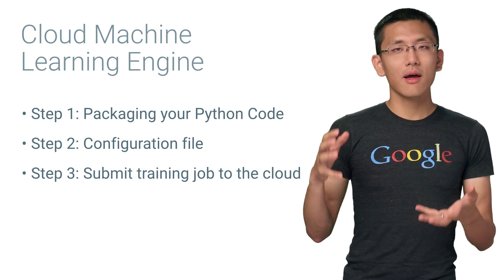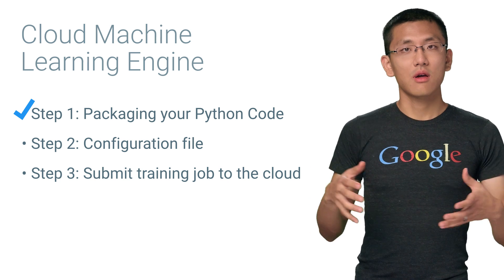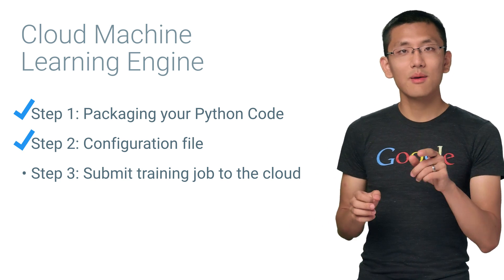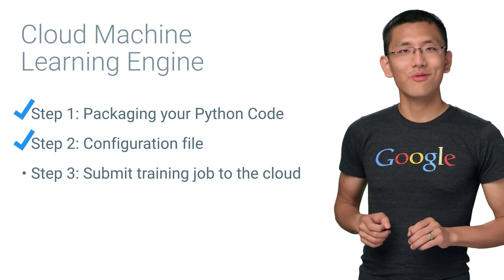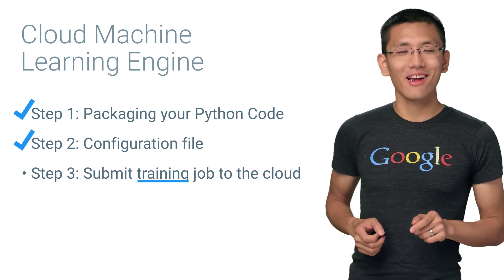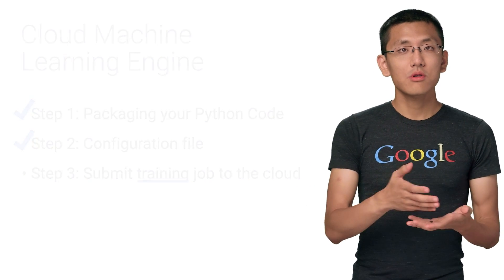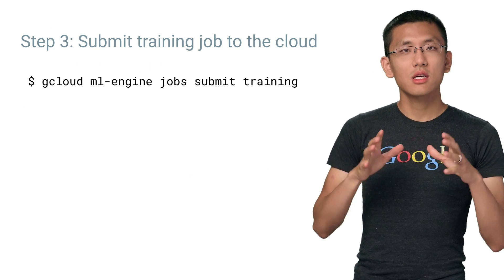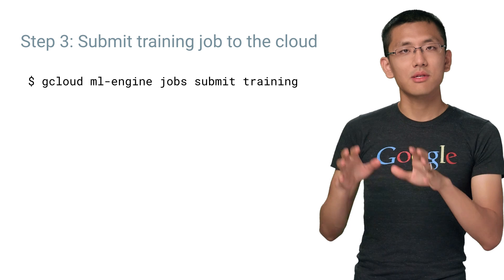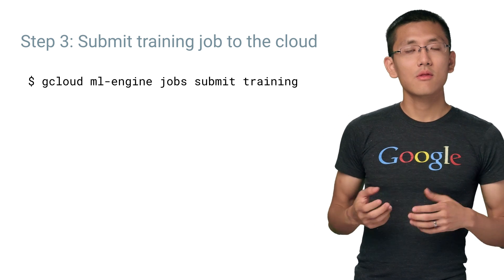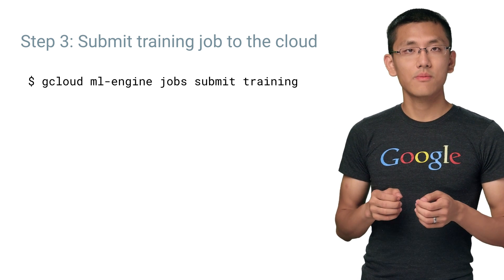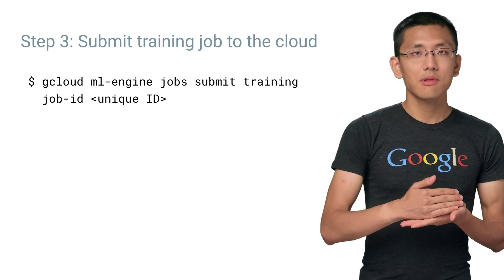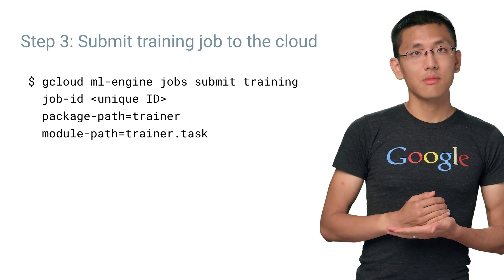We've got our Python code packaged up and we have our configuration file written out. So let's move on to the step you've all been waiting for: the training. To submit a training job, we'll use the gcloud command line tool and run gcloud ml-engine jobs submit training. There's also an equivalent REST API call. We specify a unique job name, the package path and module name.